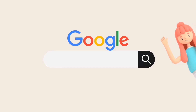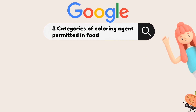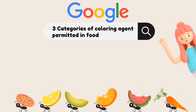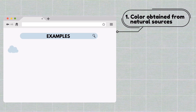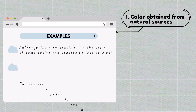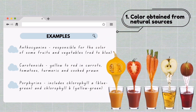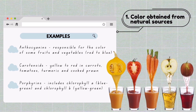Now let's look at three categories of coloring agents permitted in food. The first category is color obtained from natural sources. Examples include anthocyanin, responsible for red to blue colors in some fruits and vegetables; carotenoids, responsible for yellow to red colors in carrots, tomatoes, turmeric, and cooked prawn; and porphyrins, which include chlorophyll a (blue-green) and chlorophyll b (yellow-green).